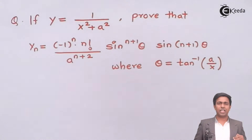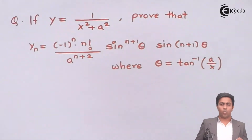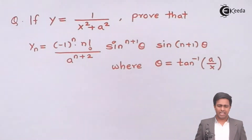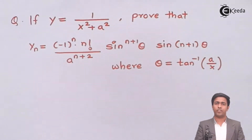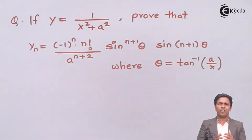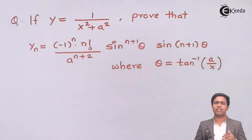The given function is 1 upon x square plus a square and we have to prove that y_n equals the given value. Now how to get the nth derivative? First of all let's observe the given function y. It is 1 upon x square plus a square, which means it is an algebraic function. So whenever we have an algebraic function we use rules of algebraic functions to find the nth derivative.